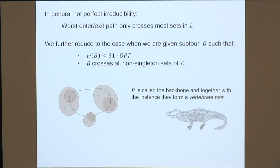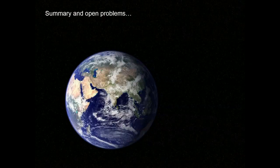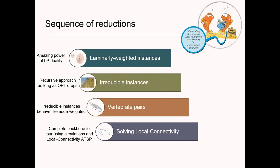For connecting the remaining vertices, we use the reduction to local-connectivity ATSP and find circulations. Laszlo has a YouTube talk going into more detail on this part. In summary, we get a constant factor approximation for general ATSP with respect to the Held-Karp relaxation, via a modular sequence of reductions: LP duality to get laminarly-weighted instances, recursive contraction to handle reducible sets, the backbone for irreducible instances, and finally local connectivity.